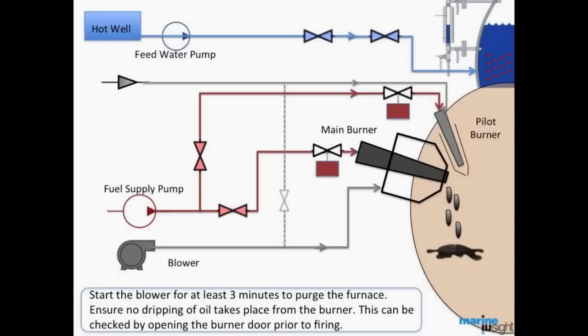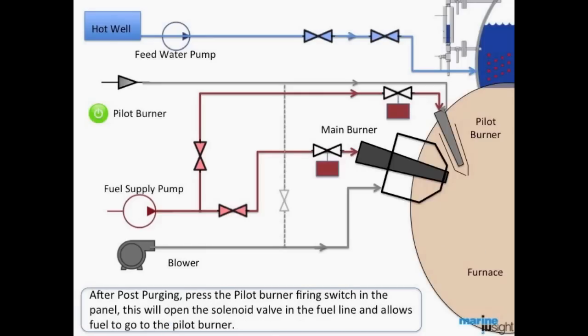Ensure no dripping of oil takes place from the burner. This can be checked by opening the burner door prior to firing. After purging, press the pilot burner firing switch in the panel. This will open the solenoid valve in the fuel line allowing fuel to go to the pilot burner.